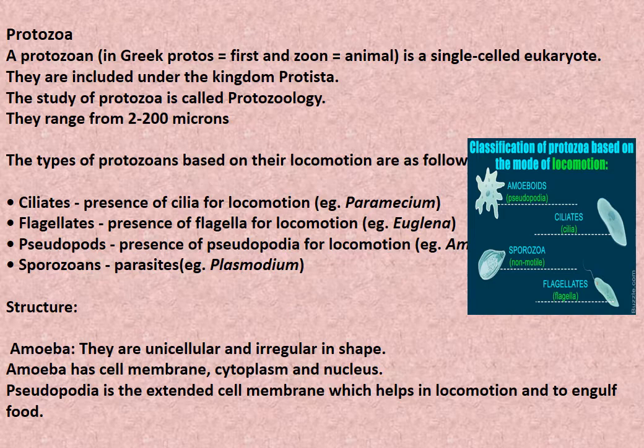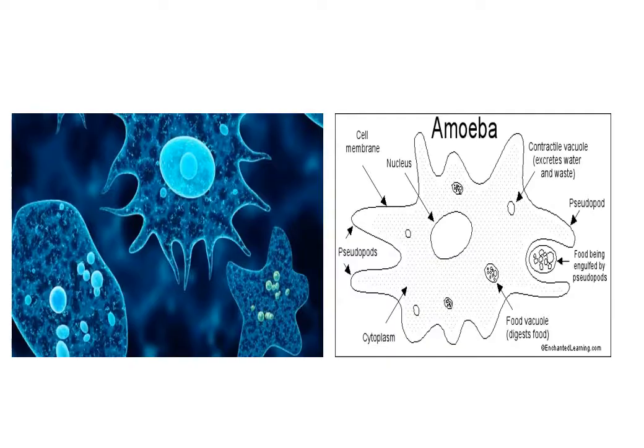Structure of Amoeba: Amoeba are unicellular and irregular in shape. Amoeba has a cell membrane, cytoplasm, and nucleus. Pseudopodia are the extended cell membrane which help in locomotion and capturing food.